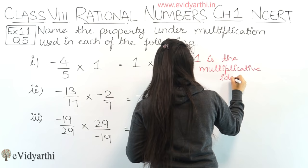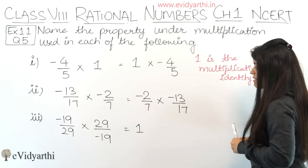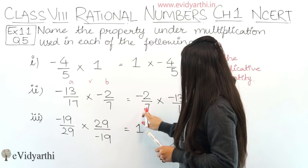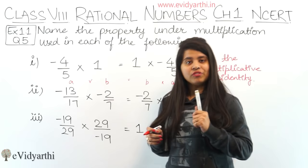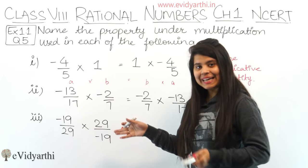Next we have minus 13 upon 17 into minus 2 upon 7 equals minus 2 upon 7 into minus 13 upon 17. If we take this as a and this as b, then a into b equals b into a. So this is the commutative property. For example, 2 into 4 is 8, and 4 into 2 is also 8.